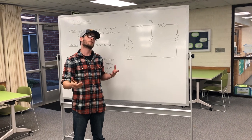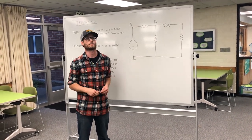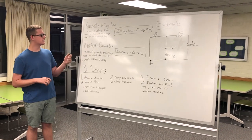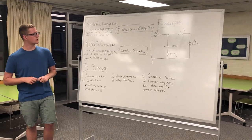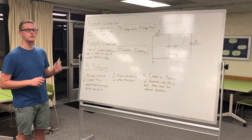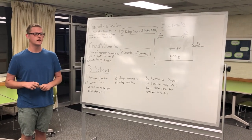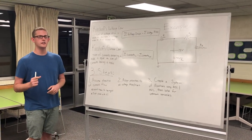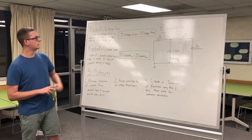Understanding what a loop is and how loops work with nodes and branches will be critical to understanding how to apply KCL and KVL. Kirchhoff's voltage law states that the sum of voltage drops is equal to the sum of voltage rises in a closed loop. Kirchhoff's current law states that the sum of the currents entering a node is equal to the sum of the currents leaving a node, as shown in the equations here.